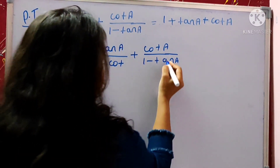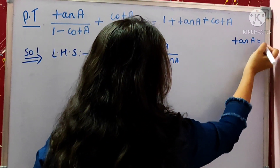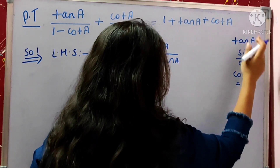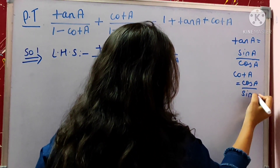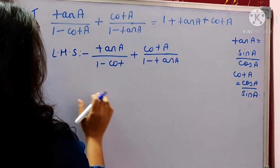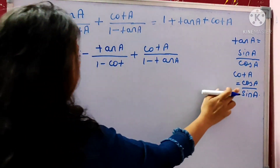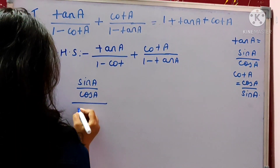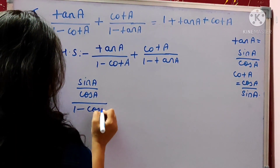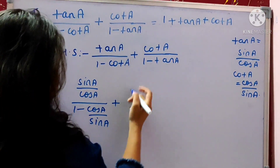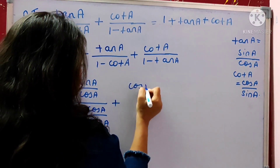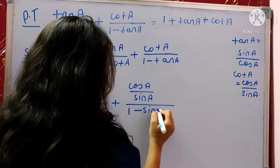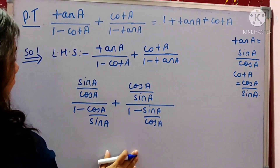Now we have to know the value of tan A and cot A. The value of tan A is sin A divided by cos A, and the value of cot A, just the reciprocal of tan A, is cos A divided by sin A. Now moving toward the LHS part, putting the value of tan A and cot A: tan A equals sin A divided by cos A, and 1 minus cot A means 1 minus cos A divided by sin A.